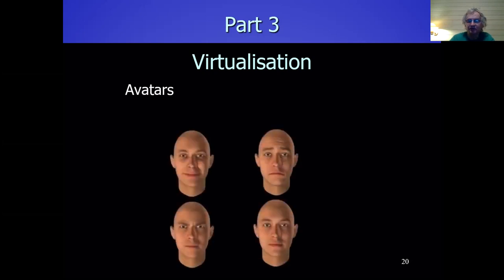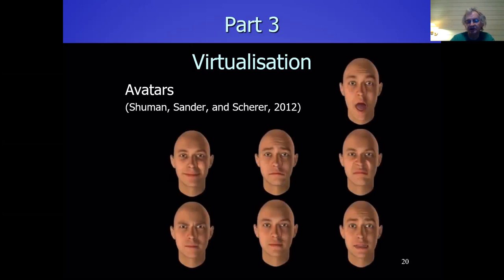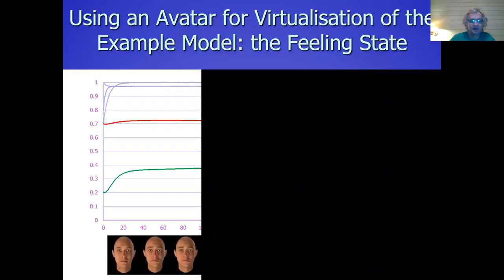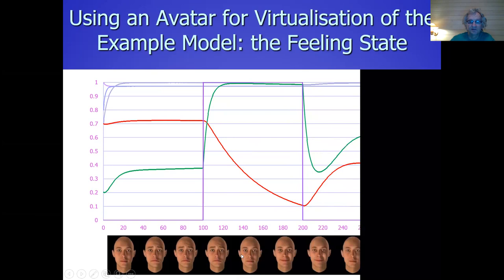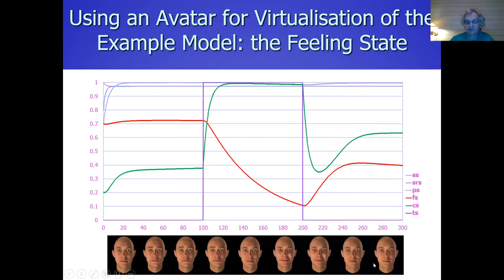The next step is virtualization. After you have such simulations, you want to express them, to display them so that humans can really have interaction with them. We can use avatars — here is an example of an avatar that can show different types of emotions. There are many types of avatars available at the moment. For example, this negative feeling level can be expressed in the faces over time. If the stress level comes lower, you can see the face also becomes more positive, and then you get into some kind of neutral situation. This is how the idea of the project works.